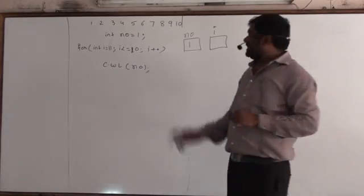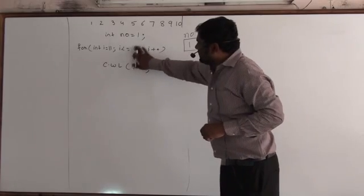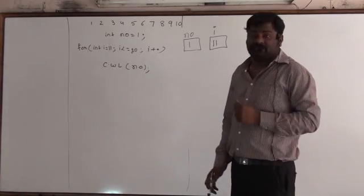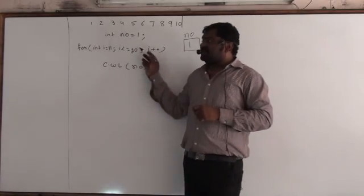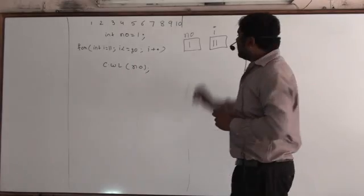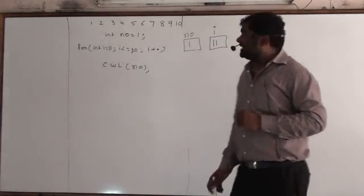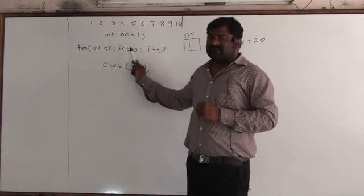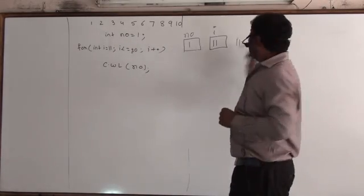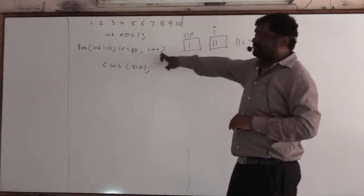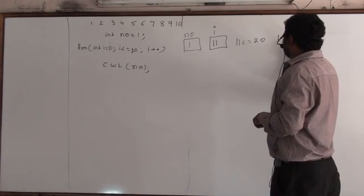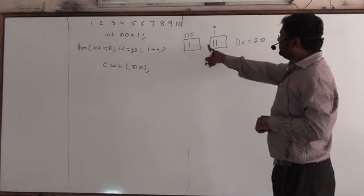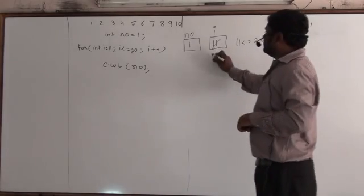Here I will fix the loop starting at 11. The condition is i less than or equals to 20. First step: initialization. Second step: condition. If the condition is satisfied, it will enter and print number, which is 1. Then increment: i++ means i equals i plus 1. i is 11, so 11 plus 1 is 12. So i is now 12.